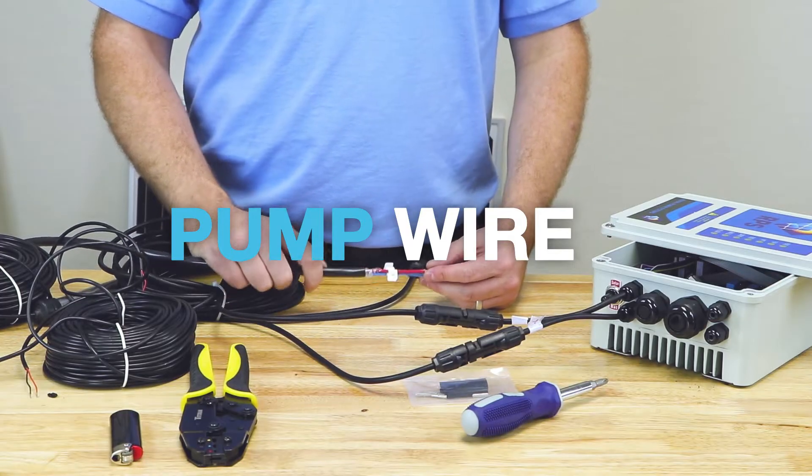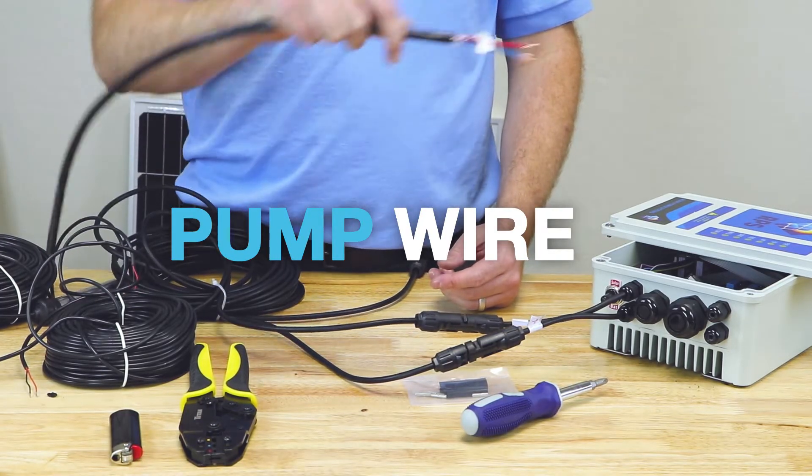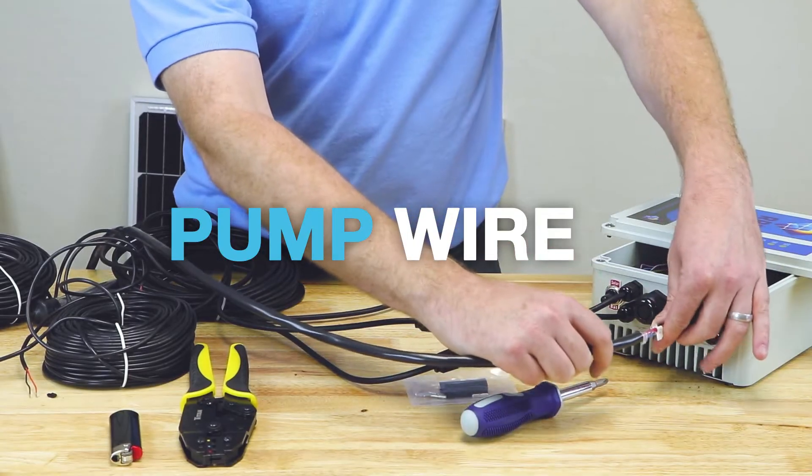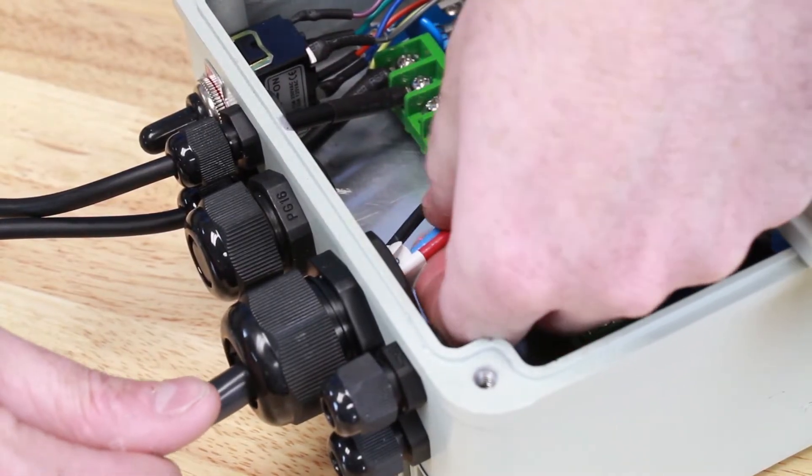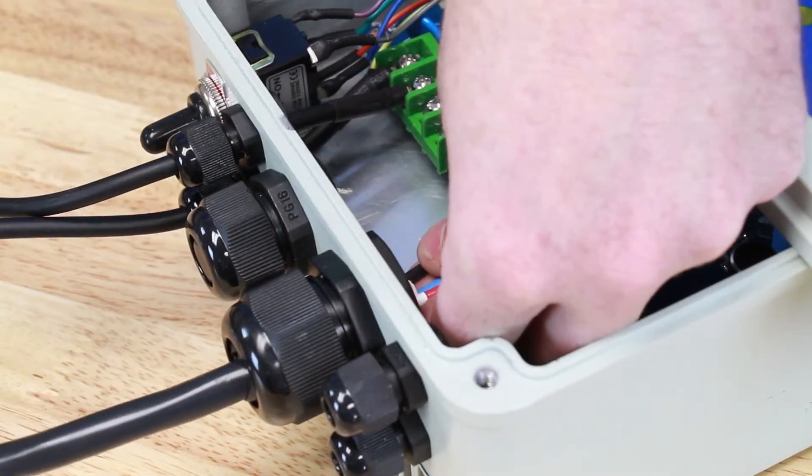We're going to make our final connections to the controller, and first we're going to insert the pump wire in through the grommet at the bottom and hook it right up to the screw terminals.